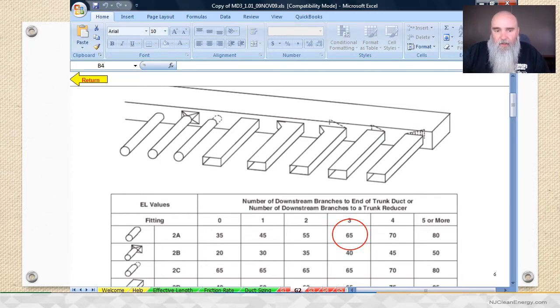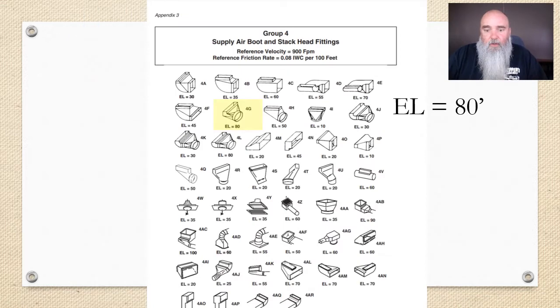Let's pretend that you already know this part, and what you know is these ELs. Where do they actually come from? Well, they come from a database from ASHRAE. Number one—number two, if you look at the top of this, the reference velocity is 900 feet per minute. So the equivalent length represents the pressure drop of the air moving around that fitting at 900 feet per minute.